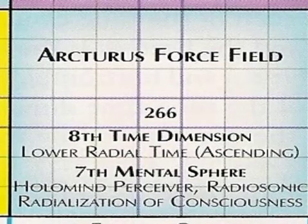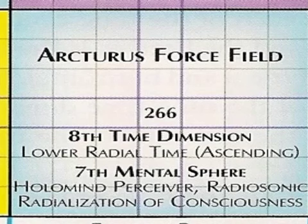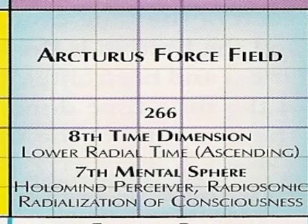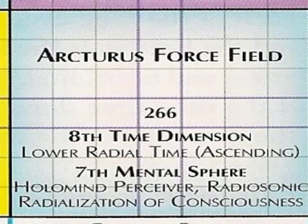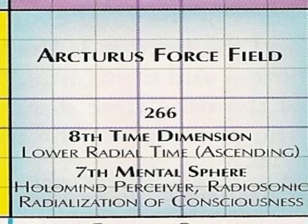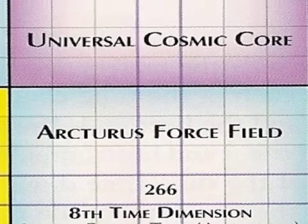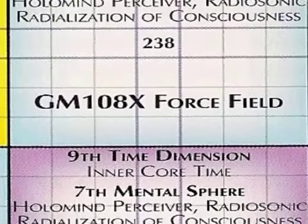Two, the eighth time dimension, universal core of harmonic chords. This dimension is home to the Arcturus force field holomind perceiver, located between the cosmic synchronization and cosmic cube outer time dimensions. This dimension is aligned with the gravitational plane and is translated into codes of art and ceremonial magic. Working in tandem with the cosmic cube, it becomes the second creation.